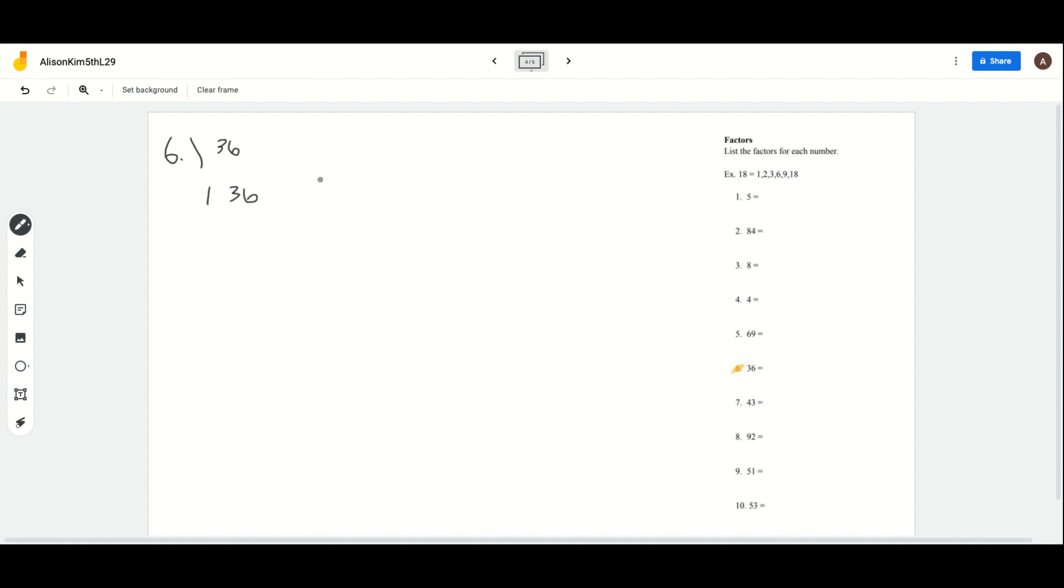Now let's just go down from there. Let's do 2. Can 2 go into 36? Yes, it can. Why? Because 6 is divisible by 2. So we're going to divide. We get 18. So it will be 2 and 18.